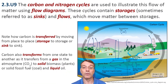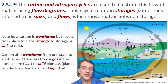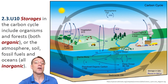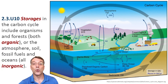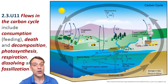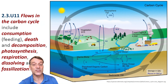The carbon and nitrogen cycles illustrate matter flows using diagrams that show storages or sinks and flows. In the carbon cycle, carbon transfers between locations and transforms between states — going from gaseous CO2 to solid biomass or fossil fuels. Storages in the carbon cycle include organic forms such as organisms and forests, and inorganic forms such as carbon in the atmosphere, soils, fossil fuels, and oceans. Each storage holds carbon for different amounts of time, from days in organisms to millions of years in fossil fuels. Flows in the carbon cycle include consumption, death, decomposition, photosynthesis, respiration, dissolving, and fossilization. These processes move carbon between different reservoirs in the biosphere.